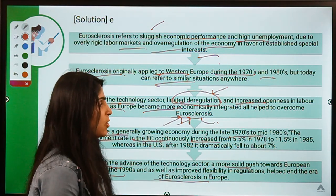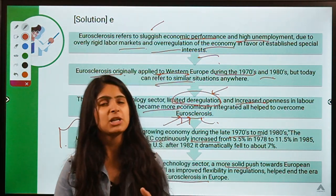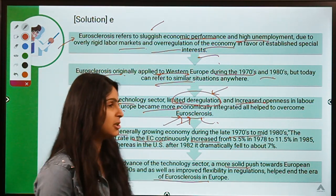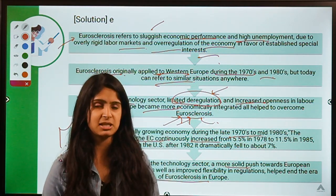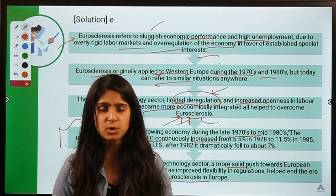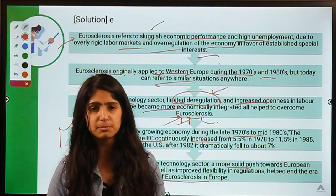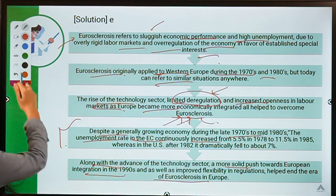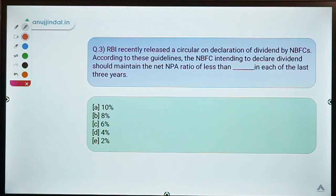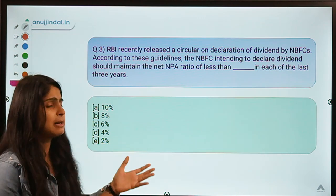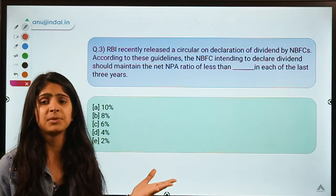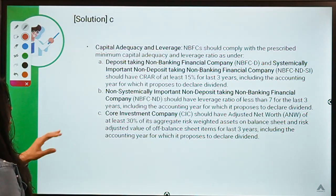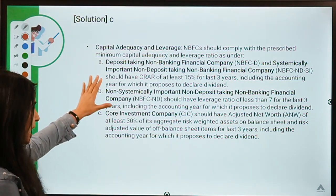For homework, you have to mention in the comments who coined the term Eurosclerosis and made it popular. These were the five questions for today. I hope you learned something new from this video. If you did, do not forget to hit the like button. We also discussed a question about RBI coming up with guidelines for NBFCs' dividend payments — a slide was missing due to a technical issue, and here you can see the categories and parameters that RBI is requiring for NBFCs to come out with dividends.